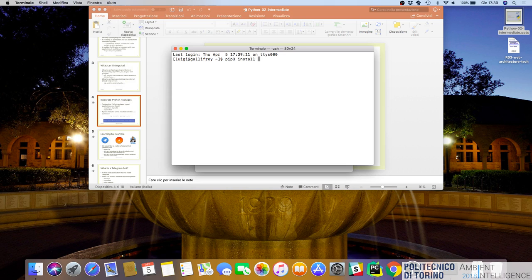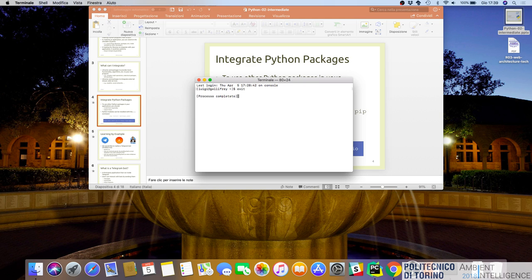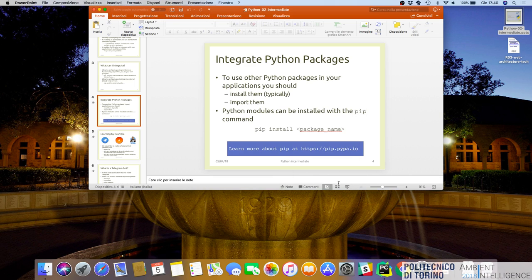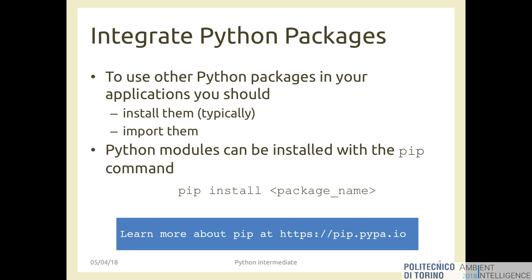We will see two Python packages today to install in our example application, which you will continue in the lab on Monday. You can install a package with pip install and it will be available for the entire operating system — every Python program can use it. You can also do the same in PyCharm. Behind the graphical interface, PyCharm uses the same pip program to install packages.